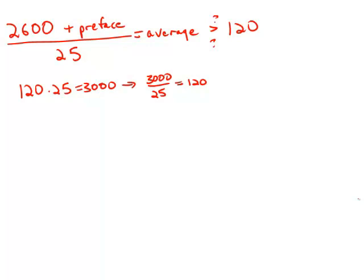And so if the words in the preface are over 400, because they'd have to be 400 for the total number of words to be up to 3,000. If the preface is more than 400 words, then that is equivalent to the average being over 120.